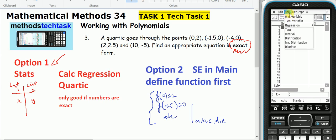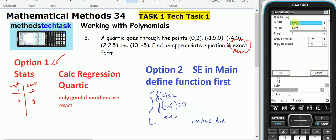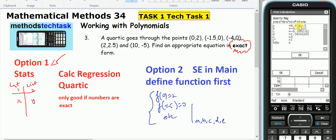So I'll go calc, regression, quartic regression. Yes, my x's are in list one, my y's are in list two. Okay. And you can see that my answers are not plain. So that method's no good in this example.